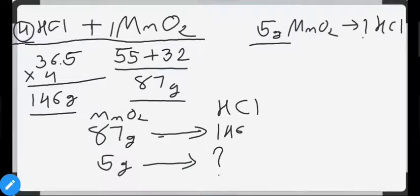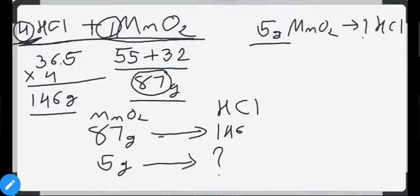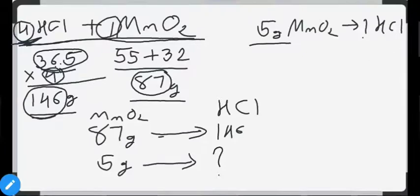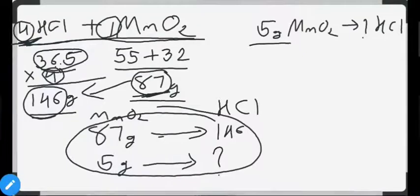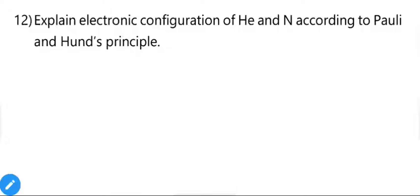To summarize: from the balanced equation, 1 mol MnO₂ requires 4 mol HCl. Molar mass of MnO₂ = 87 g, and 4 mol HCl = 146 g. So 87 g MnO₂ consumes 146 g HCl. Cross multiply: 87 is to 146 as 5 is to x. Solve to find your answer.